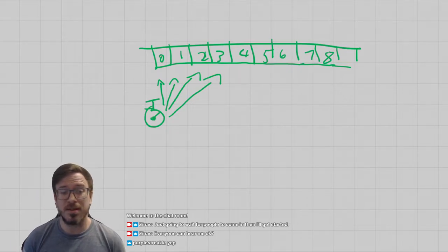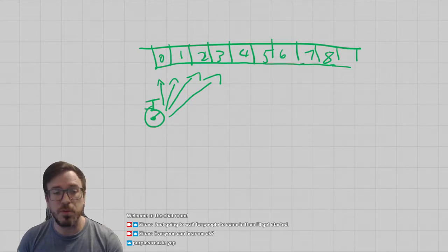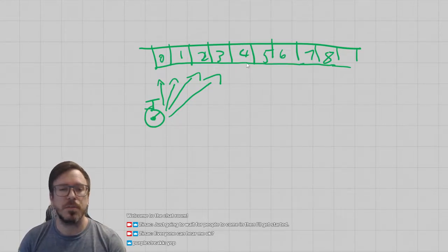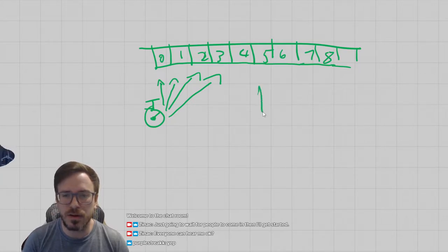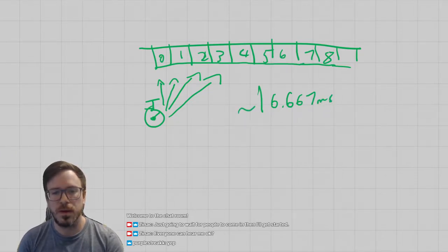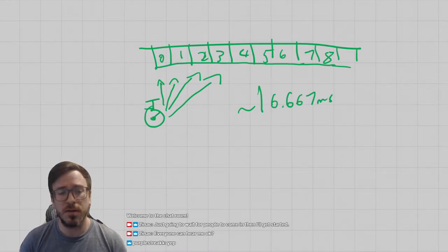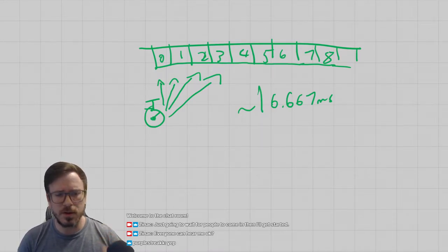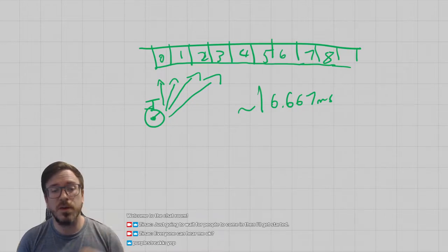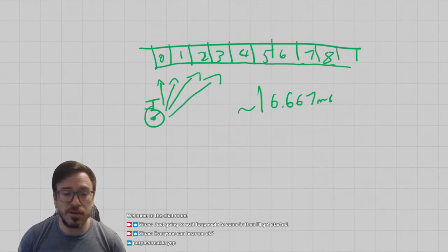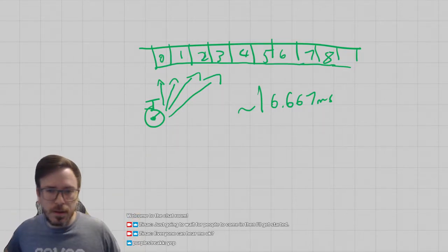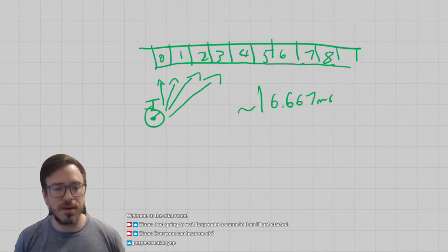Generally, we update fighting games at 60 hertz, or more commonly people say 60 frames per second. That's about 16.667 milliseconds, roughly. That's our update rate. We need a clock that can send a signal at that rate. The truth is at a lower level the clock is actually updating much faster, but the important thing to understand is we need something that sends out a signal at a fixed rate. That's our clock. We're going to call these signals ticks.